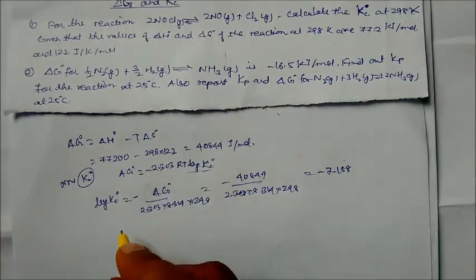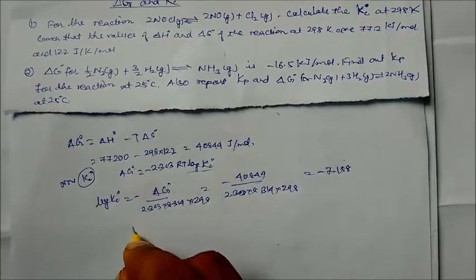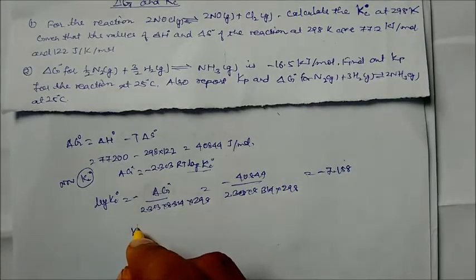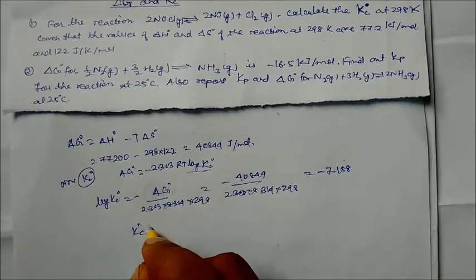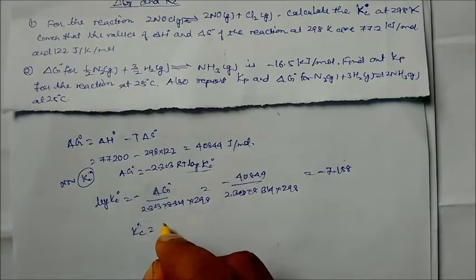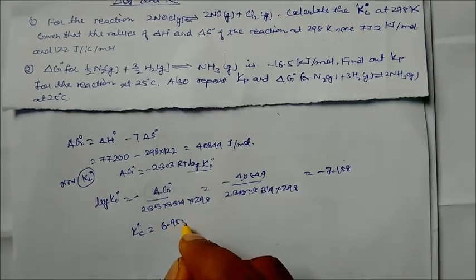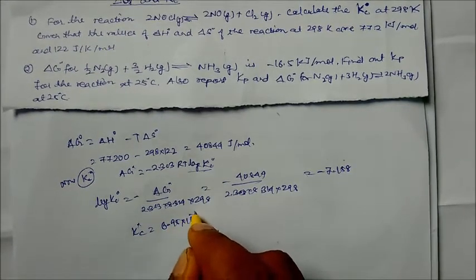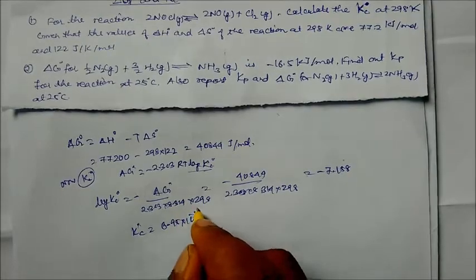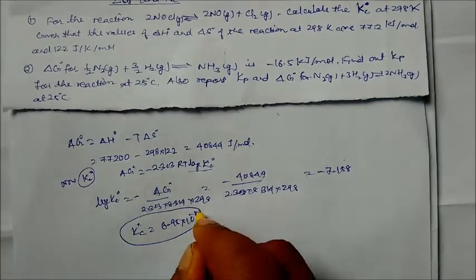Taking the antilog of −7.15, we get Kc = 6.95 × 10⁻⁸. This is our answer for the first problem.